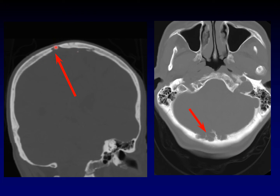Venous lakes are important because surgeons want to avoid them when performing craniotomies — you don't want to cut through a venous lake. Arachnoid granulations are important because they can impinge on venous structures and cause tinnitus or venous outflow obstruction. Large arachnoid granulations are also a secondary sign of intracranial hypertension.